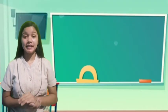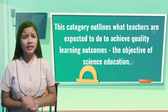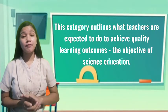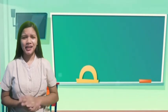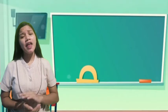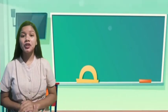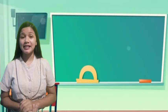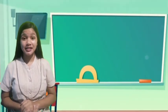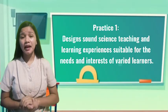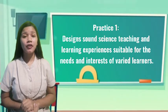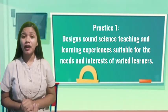Professional Practice outlines what teachers are expected to do to achieve quality learning outcomes — the objective of science education. It also expects teachers to work with learners, colleagues, parents, and other community members to achieve these objectives. The teaching practices listed include those unique to science teachers. Practice number 1: Design sound science teaching and learning experiences suitable for the needs and interests of varied learners.